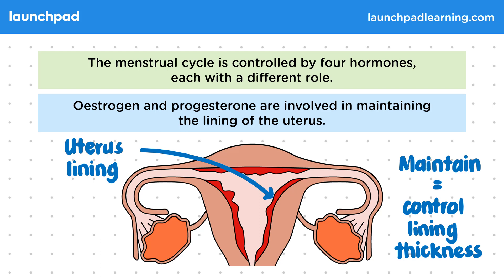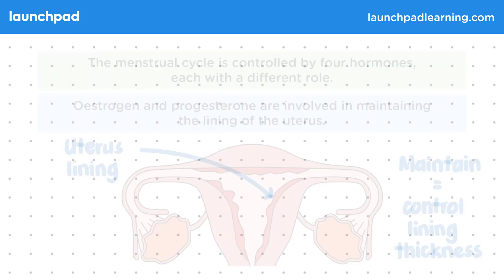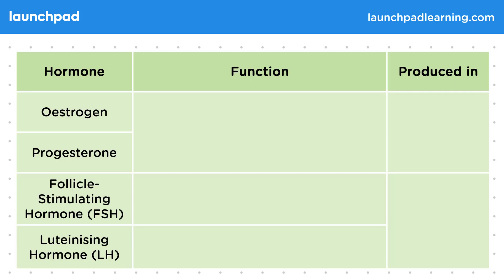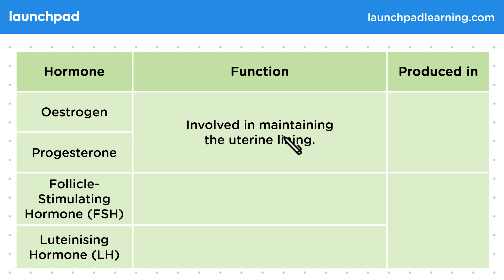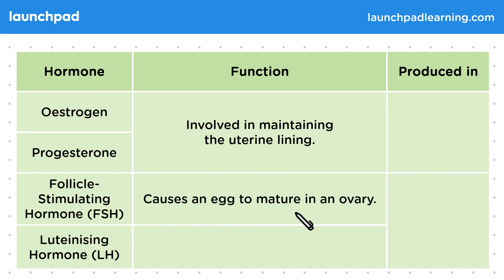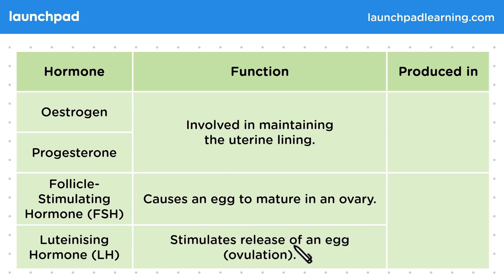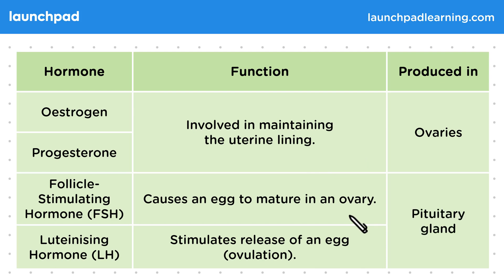In summary, this table will summarize everything that you need to know about each of these hormones. Oestrogen and progesterone are both involved in maintaining the uterine lining. Follicle-stimulating hormone, or FSH, causes an egg to mature in an ovary. And luteinizing hormone, or LH, stimulates the release of an egg — otherwise known as ovulation. Oestrogen and progesterone are produced in the ovaries, and FSH and LH are produced by the pituitary gland. You are expected to be able to recall all of this information in the exam.